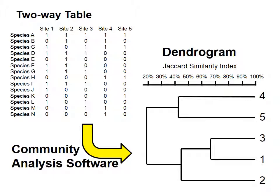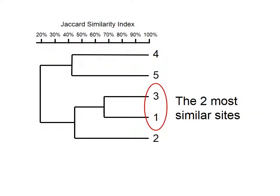The next step is to take the two-way table and run the data through community analysis software. Community analysis software performs the Jaccard similarity index calculations between all of the sites and then makes a dendrogram. The dendrogram lets you see the similarity of the sites in a useful visual manner. I have drawn an ellipse around the two most similar sites — sites 1 and 3. Following the dotted line up to the Jaccard similarity index scale, you can see that these two sites are 67% similar based on the species found on each site.